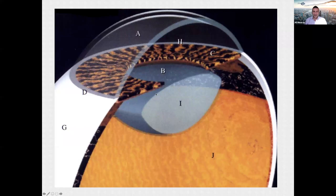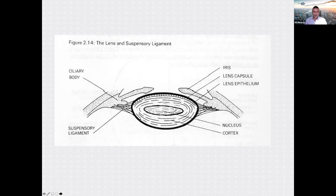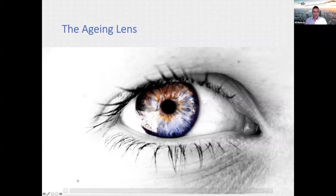Anatomy will be very familiar to you. You've got the cornea, the iris, and the lens behind the iris — this is where cataract development occurs. Looking at the lens in more detail in cross-section, you have suspensory ligaments supporting it, a central lens nucleus surrounded by a cortex, and then the lens capsule surrounds that with lens epithelial cells lining the capsule.